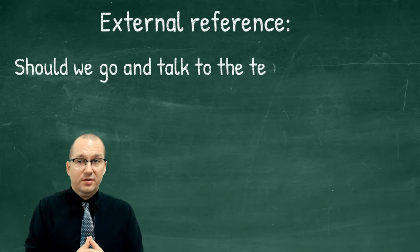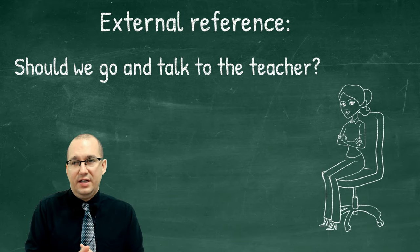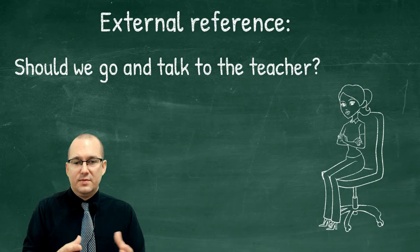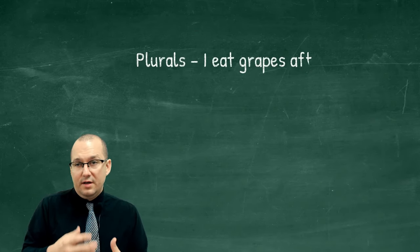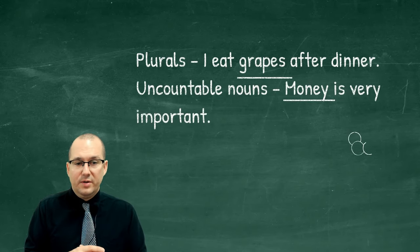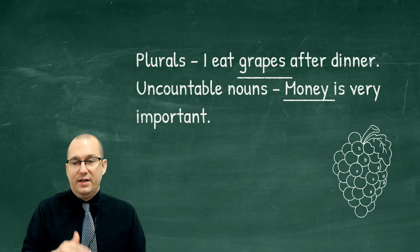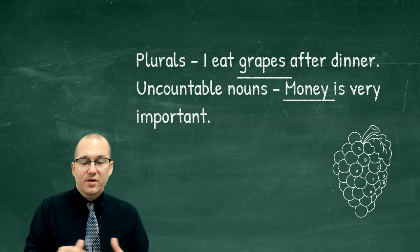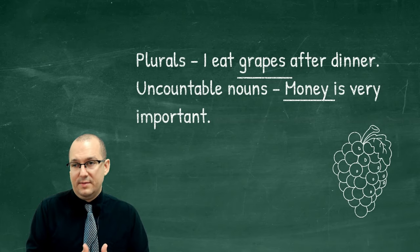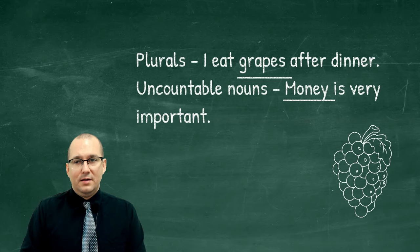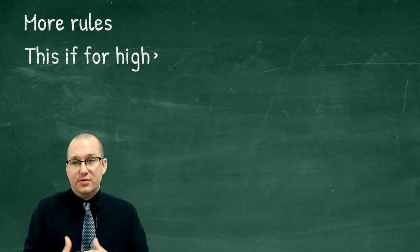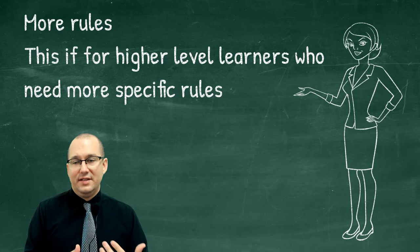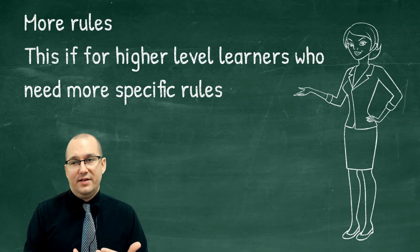There's also external reference — for example: 'Should we go and talk to the teacher or the principal?' It's something we both know and can assume, so we say 'the.' Now, there are no articles for generalizations. No articles for plurals: 'grapes after dinner' — no 'a' because 'a' means one. No articles for uncountable nouns: 'Money is very important.' We talked about this before, but it's good to make sure you understand.